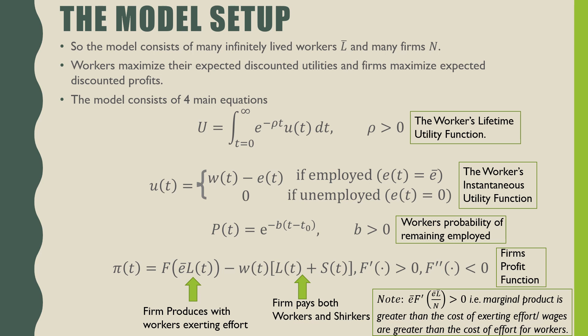Our fourth equation is our firm's profit function, where our firm produces with workers that are exerting effort and they pay both the workers and the shirkers in their firm. Note that the marginal product is greater than the cost of exerting effort for workers, meaning that the wages workers are being paid are greater than the cost of effort.